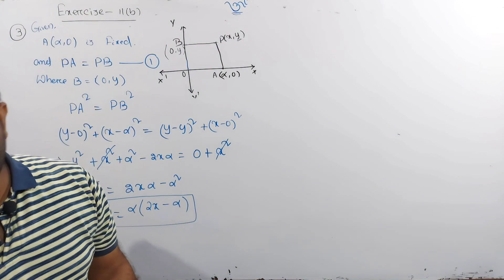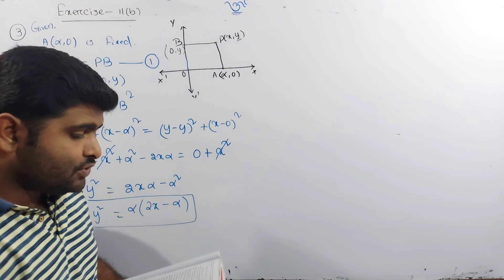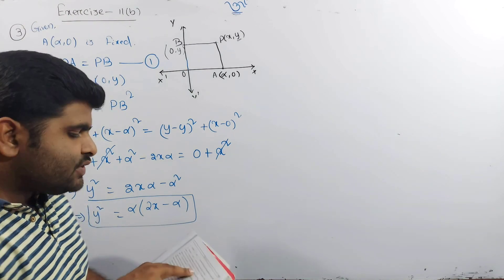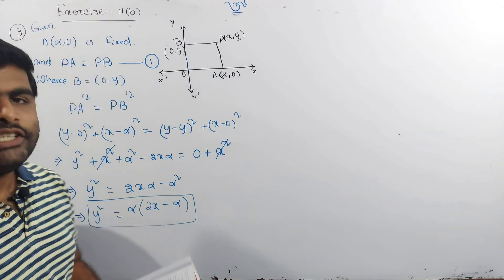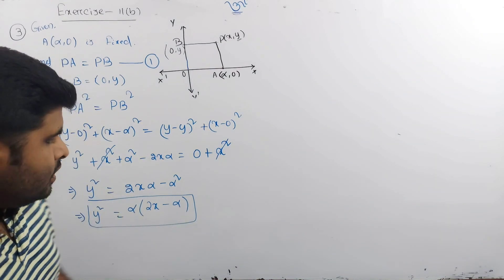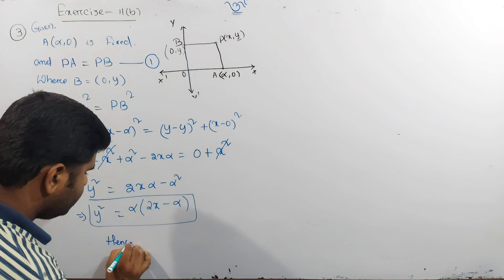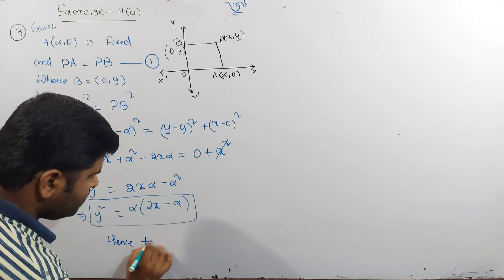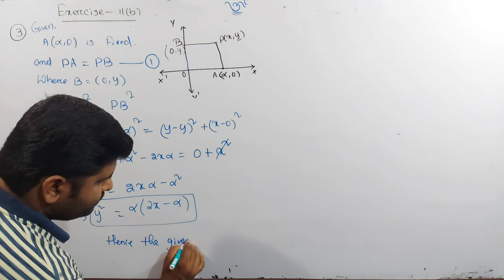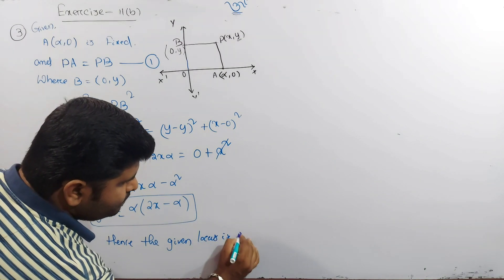Check out question number 3. We have the same result — the equation of the locus y² = α(2x − α) is proved. Hence the given locus is proved.